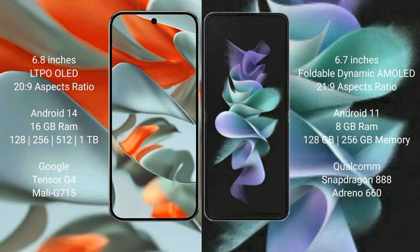Google Pixel 9 Pro XL comes with 16GB RAM, options of 8GB, 256GB, 512GB, 1TB internal storage. It features the Google Tensor G4 processor, model G715.